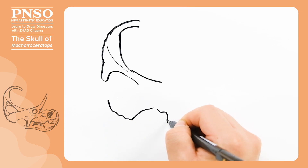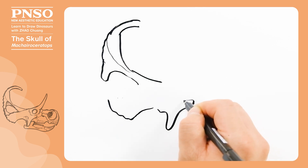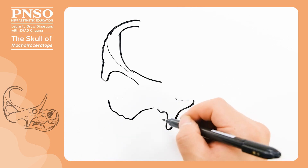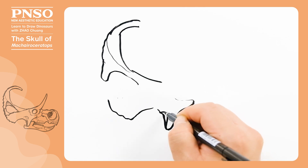Next, draw the front parts of its skull, including the jugal bones and the upward-pointing brow horns.